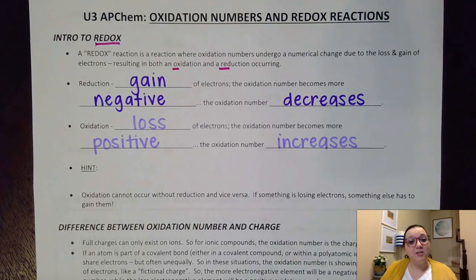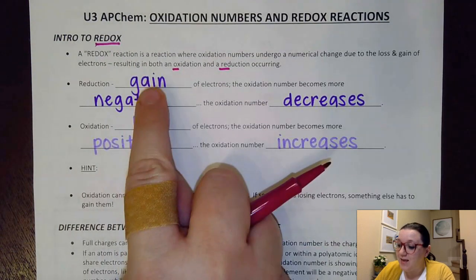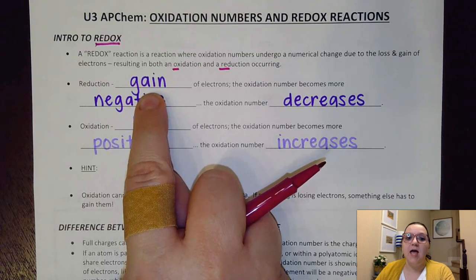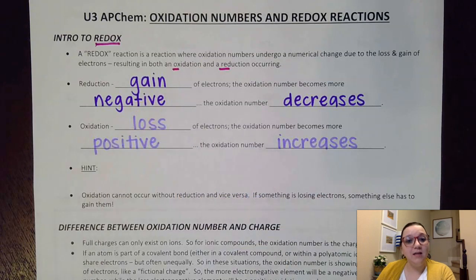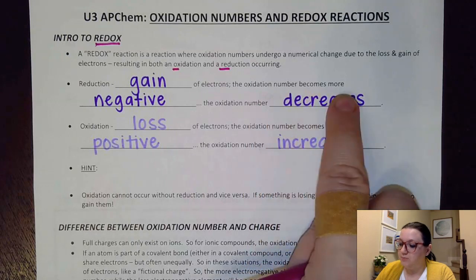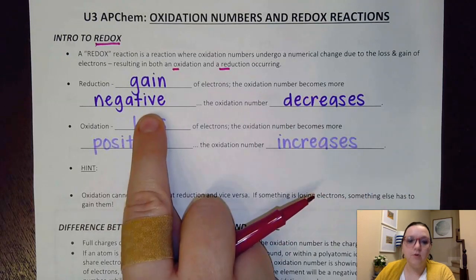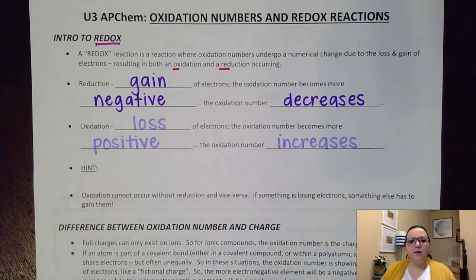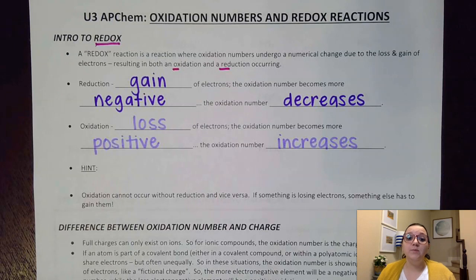Reduction is what happens when we have a gain of electrons by a substance. When we gain those negative particles, the oxidation number becomes more negative. Or if you think about the oxidation number being on a number line, we would say that the oxidation number decreases on the number line.